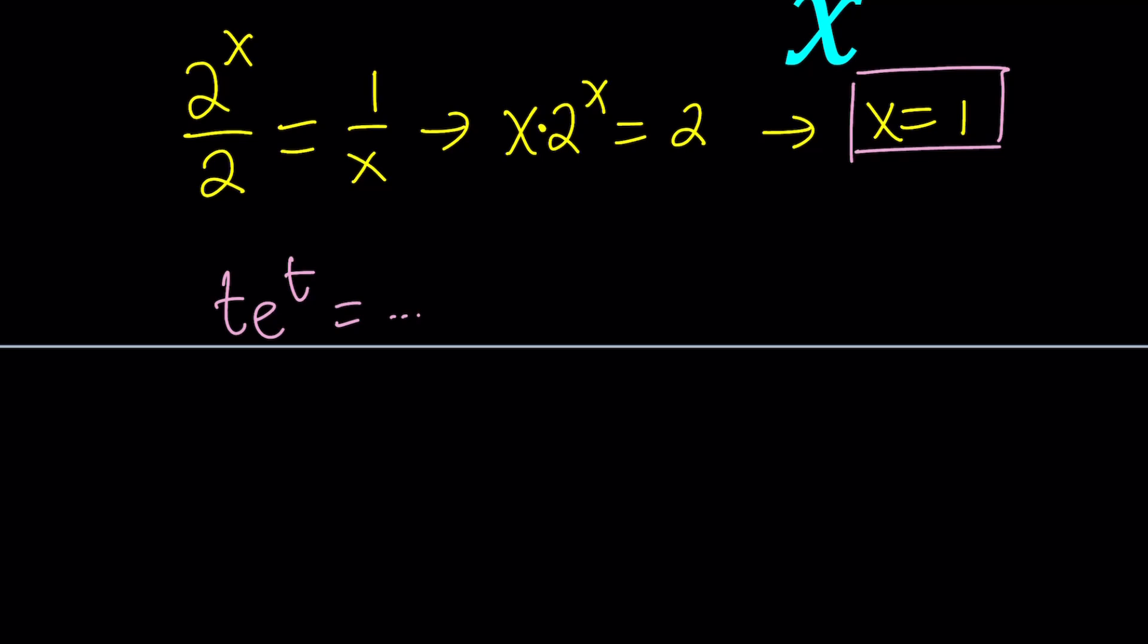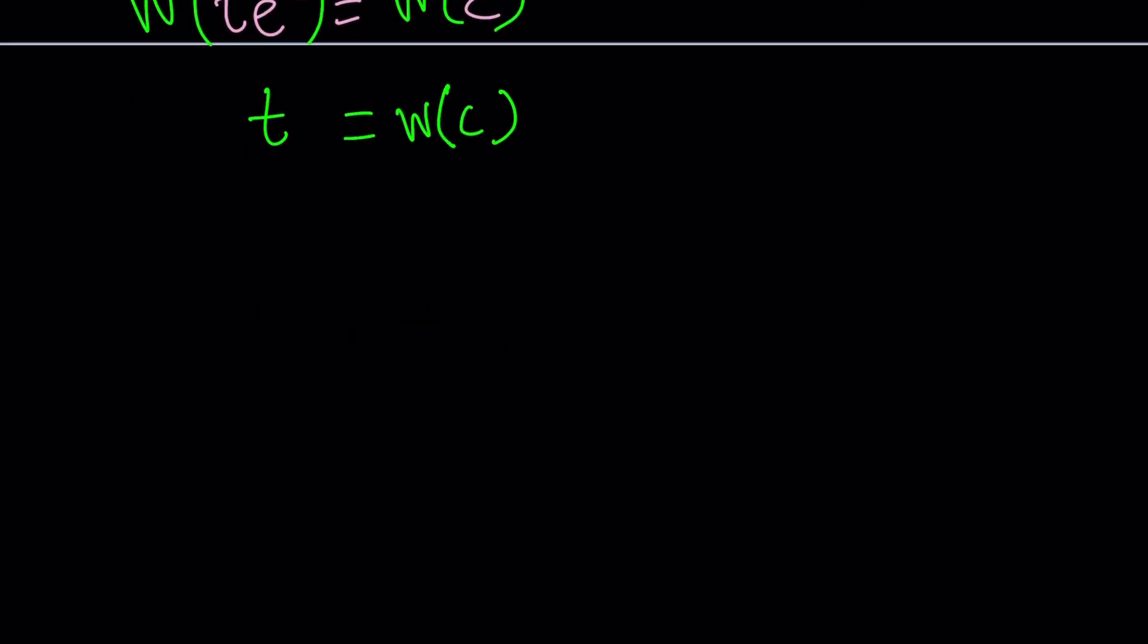So because what happens is, let's say this is equal to some constant c. Now, when you have this situation, you can go ahead and Lambert both sides, and that's going to give you, by definition, t from here. So t is going to be the Lambert W of c. So you do need an e at the base, not a 2. 2 is not a good thing. So instead of 2, we need to have an e. How do we convert it from 2 to e? That's going to be the main question.